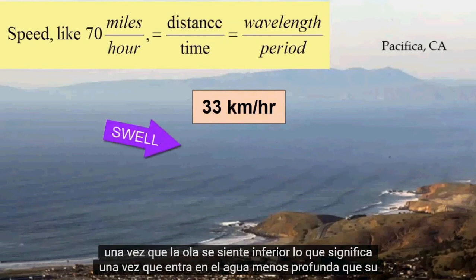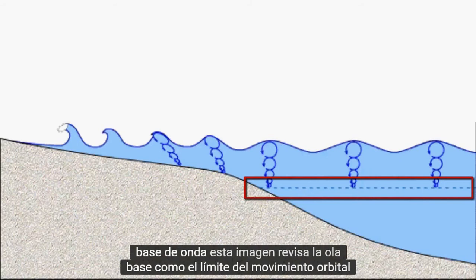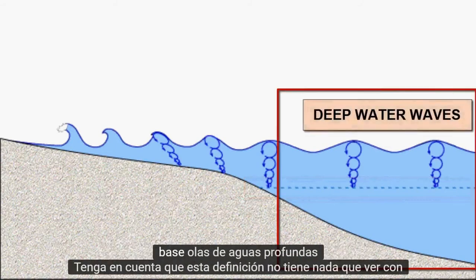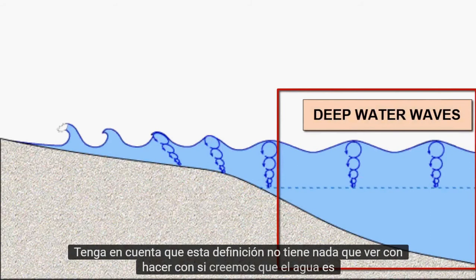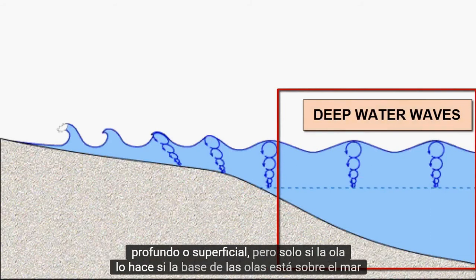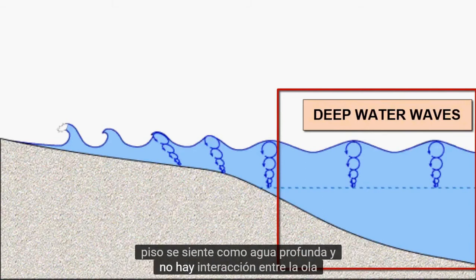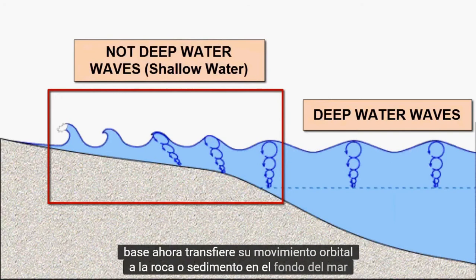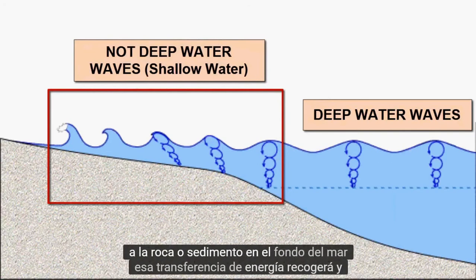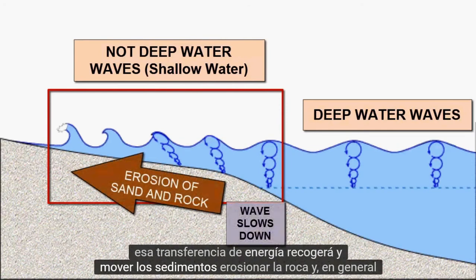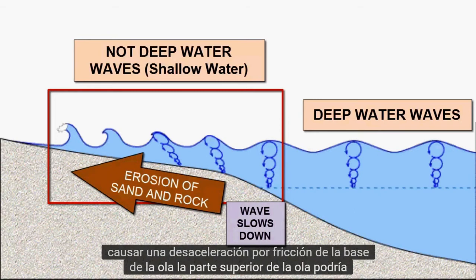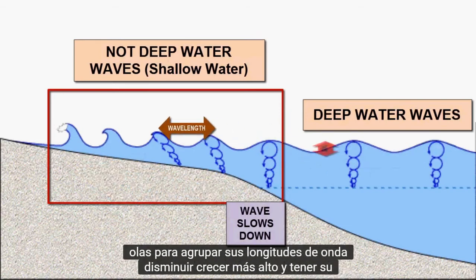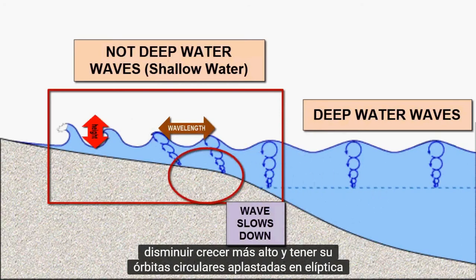However, that speed will slow once the wave feels bottom — which means once it enters water shallower than its wave base. This image reviews the wave base as the limit of orbital motion below a wave. We call waves that move through water deeper than their wave base deep water waves. Note that this definition has nothing to do with whether we think the water is deep or shallow, but only if the wave does. If the wave's base is above the seafloor, it feels like deep water and there's no interaction between the wave and the seafloor. Once a wave enters water shallower than its wave base, it transfers its orbital motion to the rock or sediment on the seafloor. That transfer of energy will pick up and move sediment, erode rock, and generally cause a frictional slowing of the base of the wave. The top of the wave might still be moving at its original speed, but the base is slowing down. This causes waves to bunch up, their wavelengths decrease, grow taller, and have their circular orbits squashed into elliptical orbits.